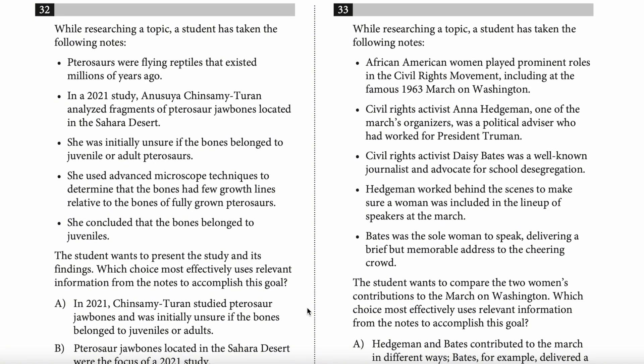I'll show you why. So you've got question 32. I want you to read the question — just the question, don't worry about the notes right now. The student wants to present the study and its findings. Which choice most effectively uses relevant information from the notes to accomplish this goal? All the notes questions are going to end with the same statement. So really, you just need to read the first part of the question: 'The student wants to present the study and its findings.' That's the question — laser focus on it.